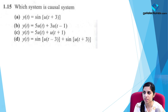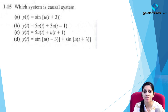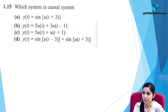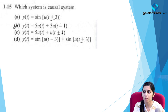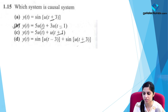The next question asks to identify the causal system. A causal system must not be advanced in time. Options A, C, and D contain time-advanced signals. Option B — 5·u(t) + 3·u(t-1) — starts at t = 0 and t = 1 respectively, so it is the only causal system. The correct option is B.